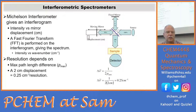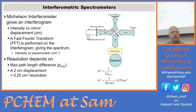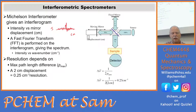Now let's talk about interferometric spectrometers. This is a picture of a Michelson interferometer — the instrument is called the interferometer and the data that comes out is called an interferogram. It measures intensity versus mirror displacement in centimeters. As the moving mirror moves back and forth we see this intensity curve — a really funny-looking shape we'll see in the next slide.